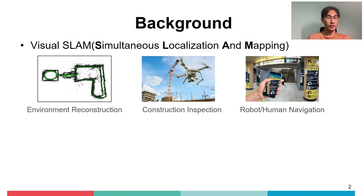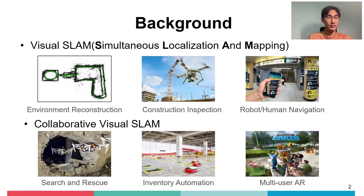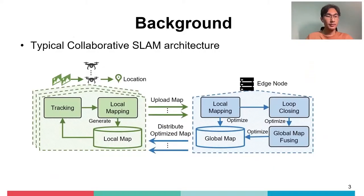SLAM, which means Simultaneous Localization and Mapping, calculates the pose of the camera and simultaneously reconstructs the surrounding environment. Among various approaches, Visual SLAM-based methods have hit the mainstream of location-based ubiquitous applications in recent years and are widely applied in mining scenarios, both in industrial applications and daily life. With the mapping area expanding rapidly, collaborative visual SLAM involving multiple agents has been attracting growing interest, playing a key role in applications such as search and rescue, inventory automation, and multi-user AR gaming.